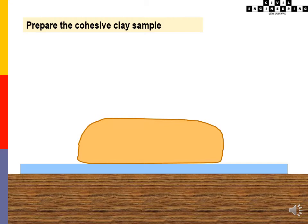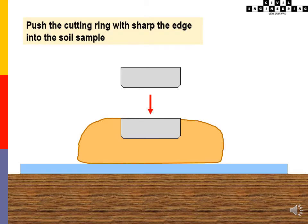Prepare the cohesive clay sample. Push the cutting ring with the sharp edge into the soil sample.